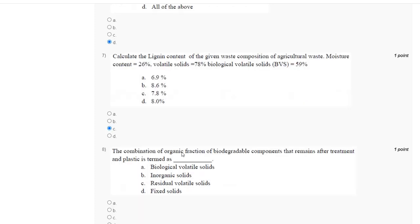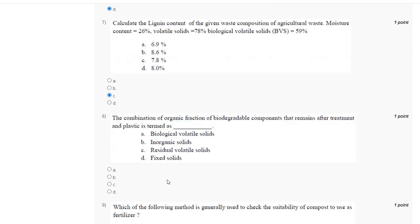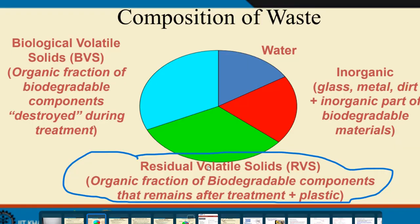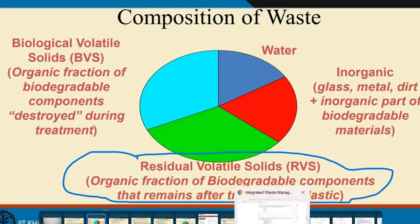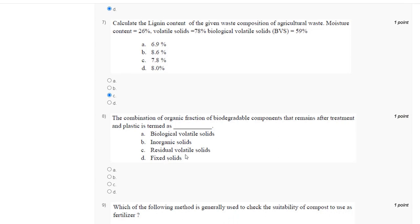Question number 8: the combination of organic fraction of biodegradable component that remains after treatment and plastic is termed as what? The correct answer is option C: residual volatile solid.